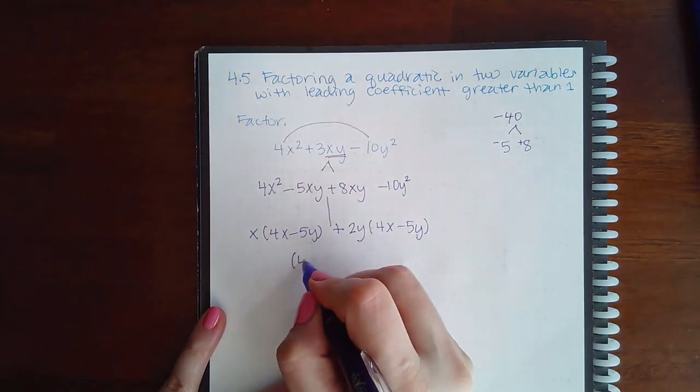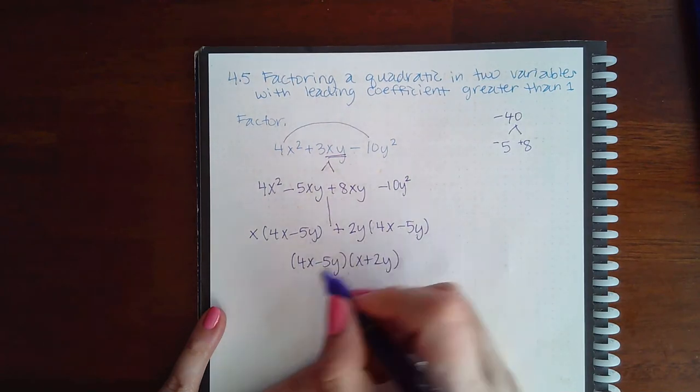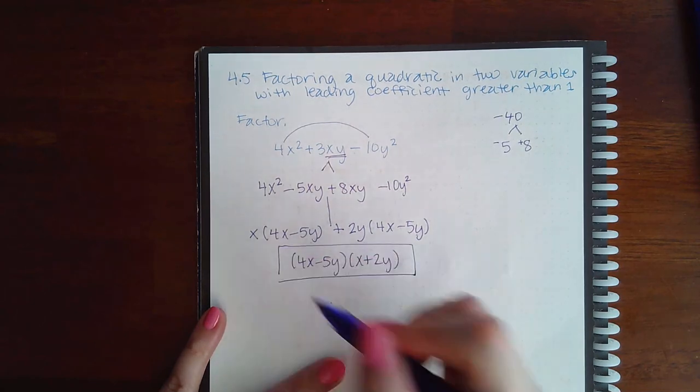And then they have the 4x minus 5y in common, leaving me with x plus 2y. And this is the final factorization.